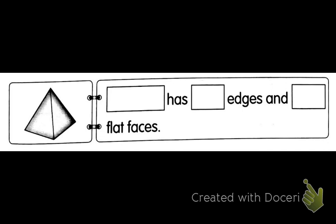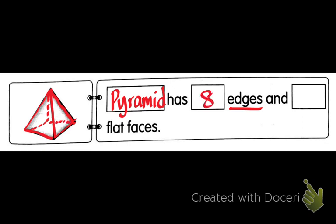Do you recognize these 3D shapes? Yes, it's a pyramid. How many edges? Let's count: one, two, three, four, five, six, seven, eight. Eight edges. And how many flat faces? Flat faces: one, two, three, over there four, five. There are five flat faces.